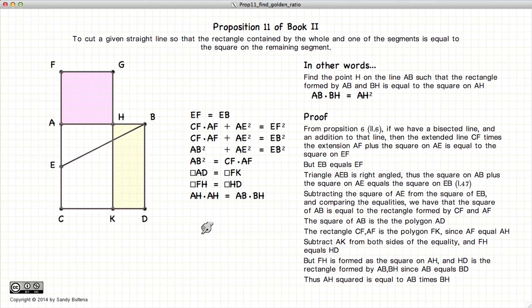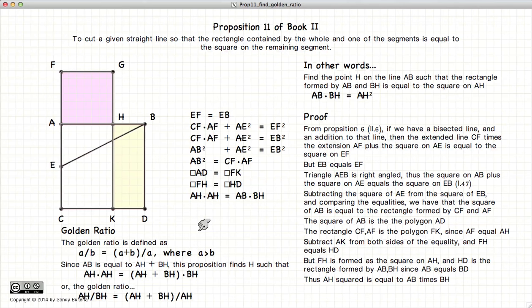Now before I conclude, I'd like to remind people about the golden ratio. The golden ratio is defined as A is to B as A plus B is to A, if A is larger than B. We can see that if AH is equal to A and HB is equal to B, these two segments define the golden ratio.